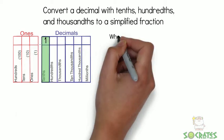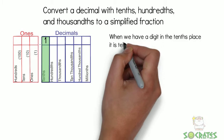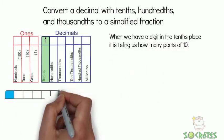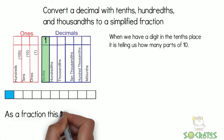So let's look at the decimal 0.1. When we have a digit in the tenths place, it is telling us how many parts of 10. So we have 1 out of 10, so as a fraction this is 1 tenth, 1 over 10.